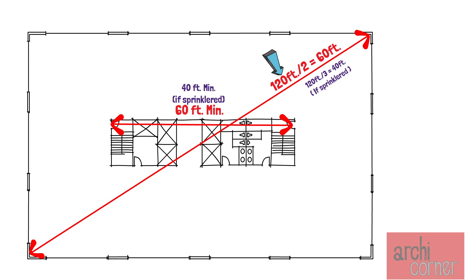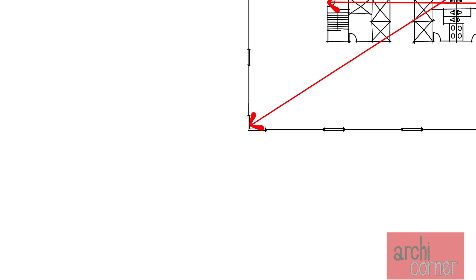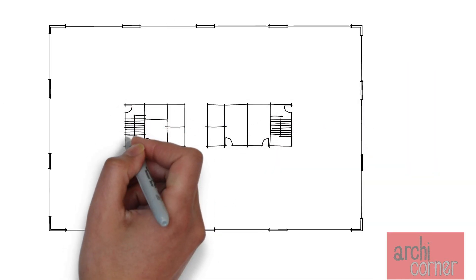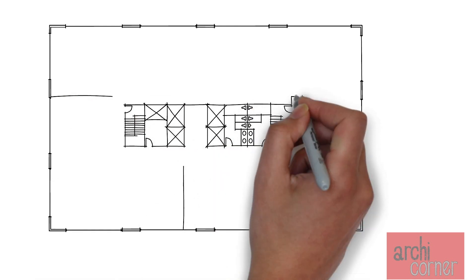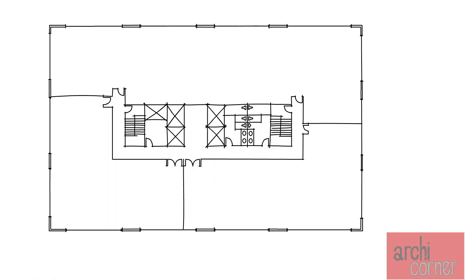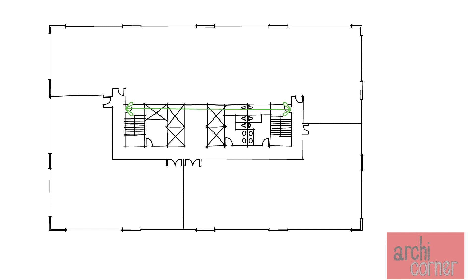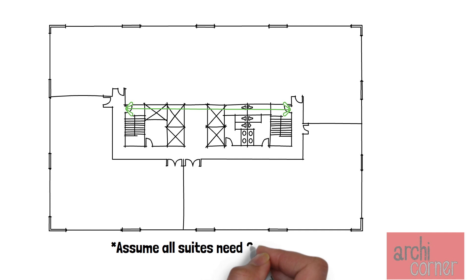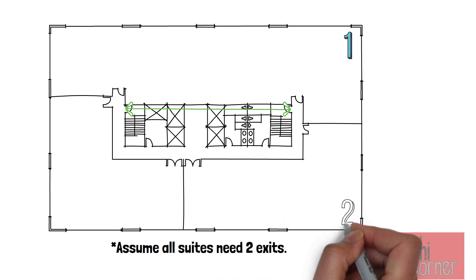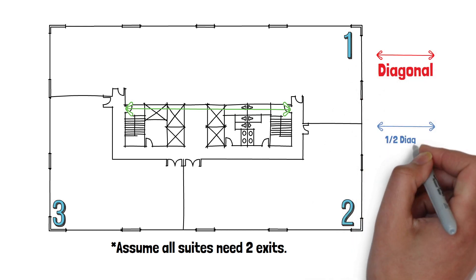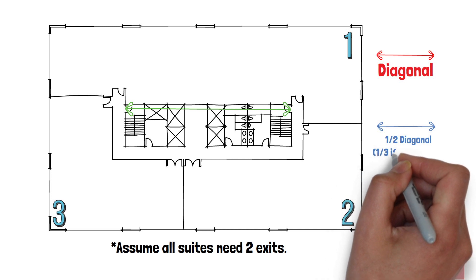There is another exception to this, but we will talk about that later. This example works if the entire floor is taken by a single tenant. But what if the floor is split into various tenants? Let's look at an example where the floor is split, keeping in mind that the separation between stairwell exits is still needed. For the sake of this example, let's assume all three suites need two exits each. Our red arrow will represent the diagonal dimension and our blue arrow the required exit separation.